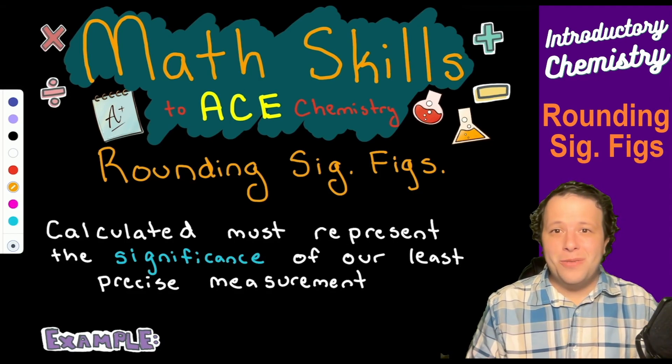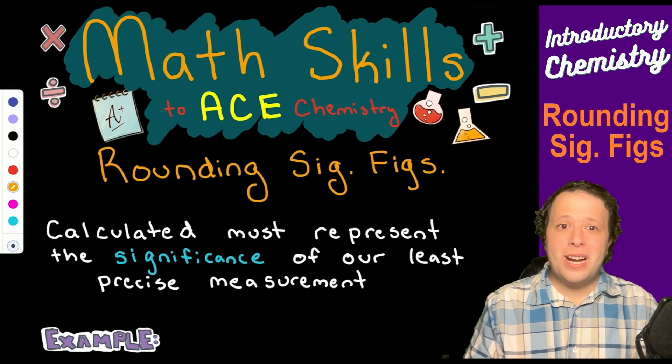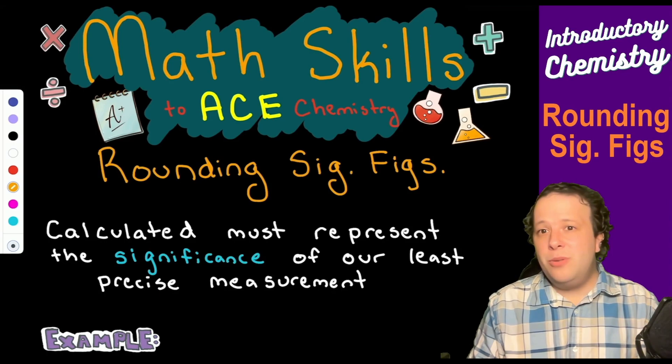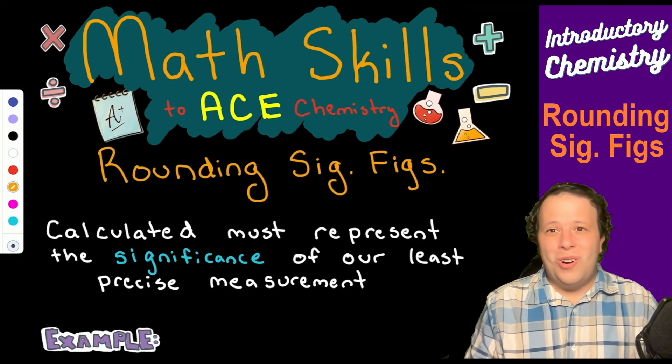Hi and welcome back to another video with Math Skills to Ace Chemistry. We're going to be going over how to round sig figs, meaning that if we are doing all these different calculations or measurements in chemistry, we need to make sure we are representing our values with the correct amount of significance.